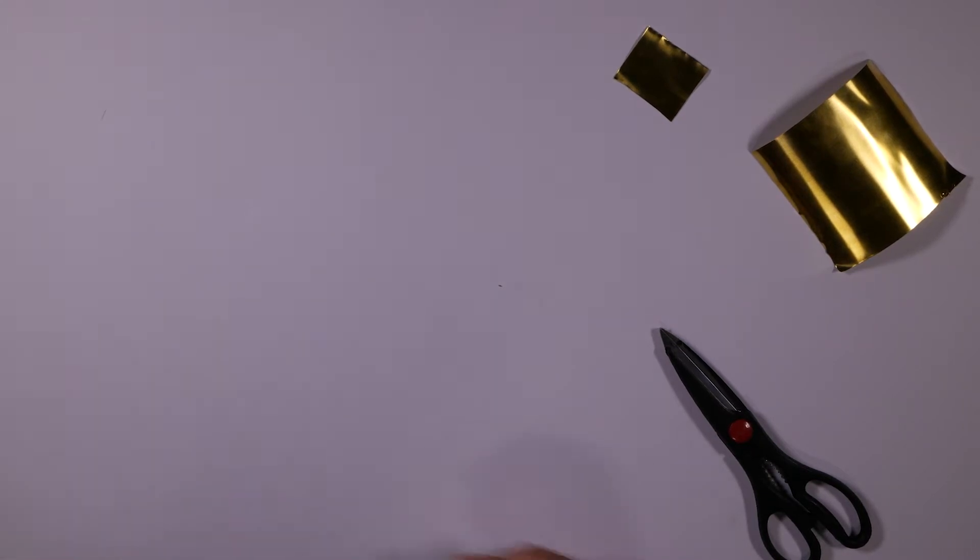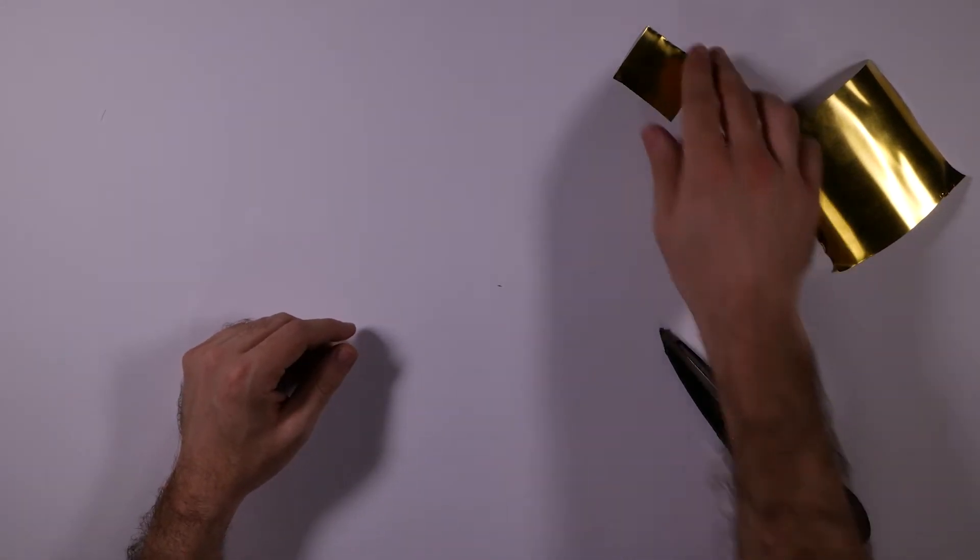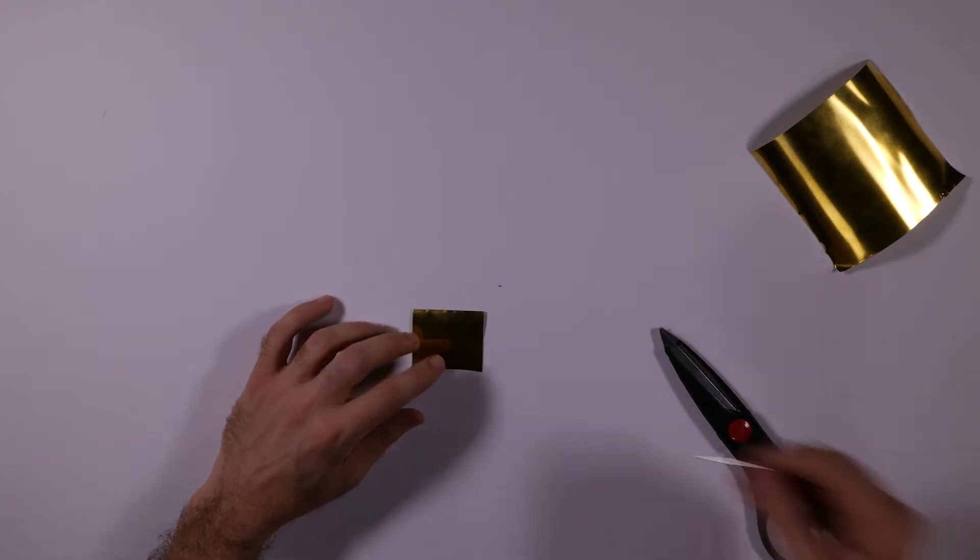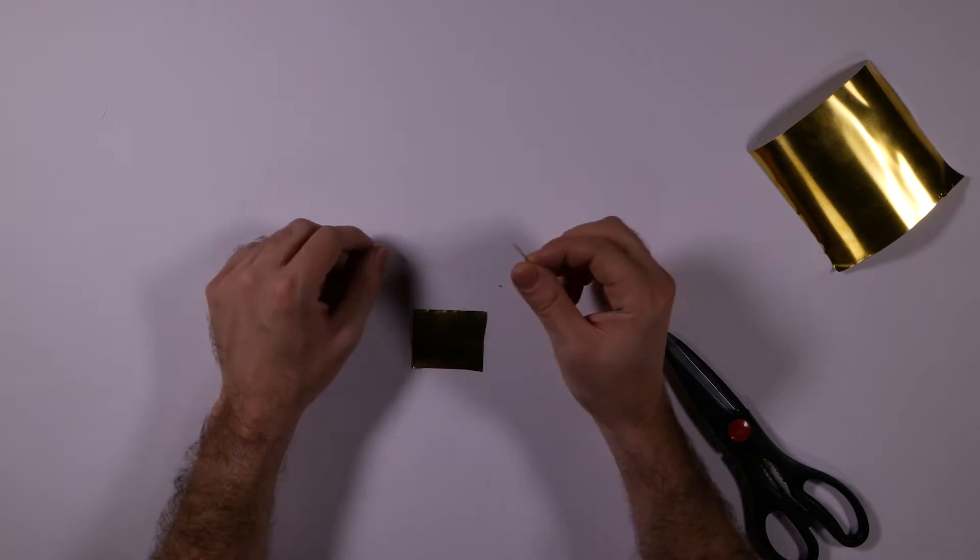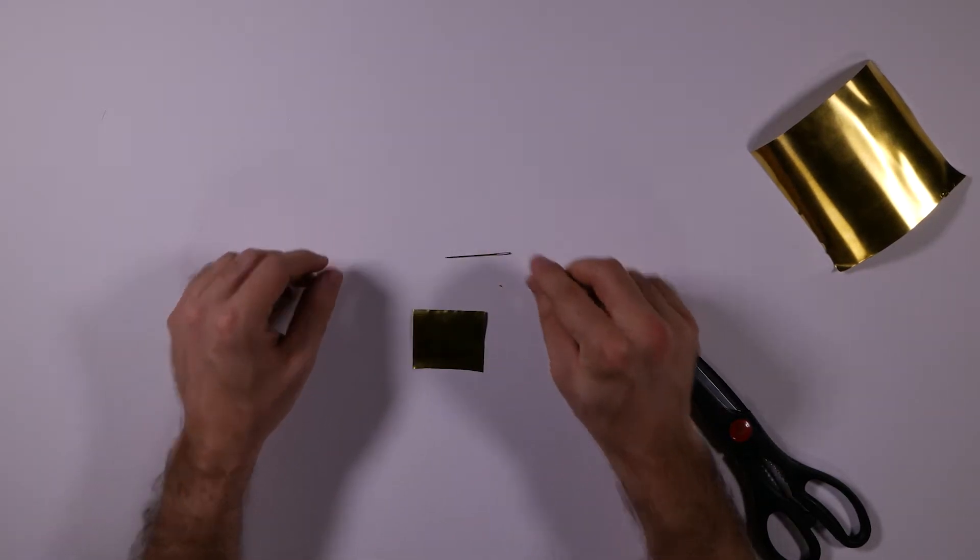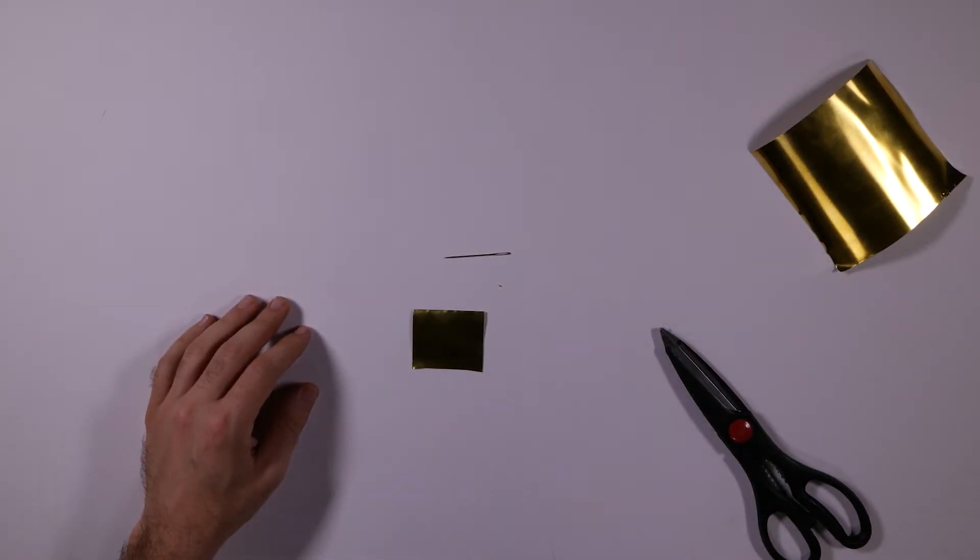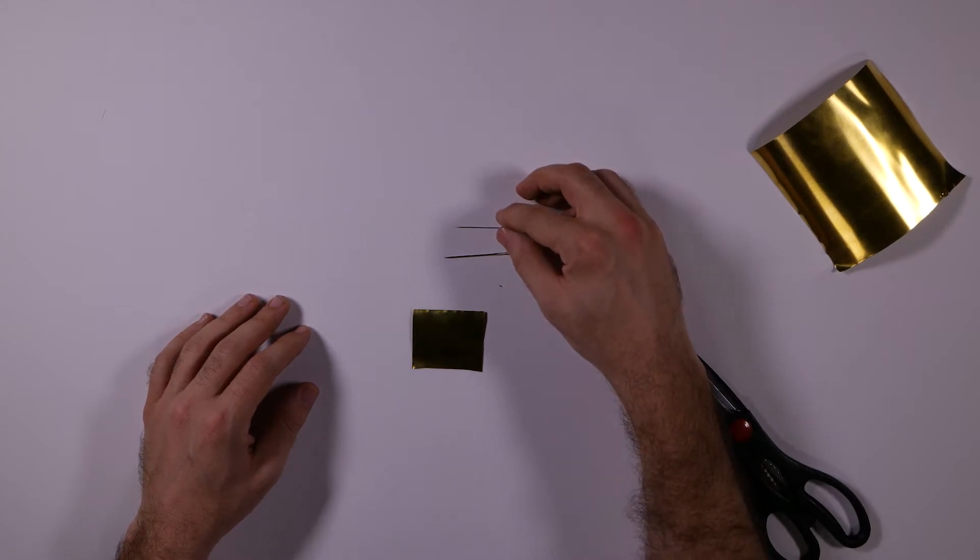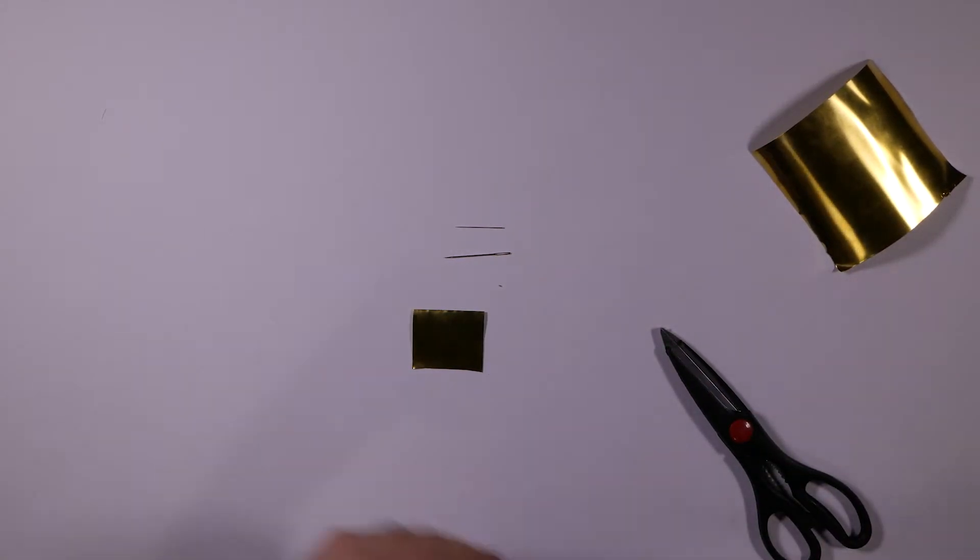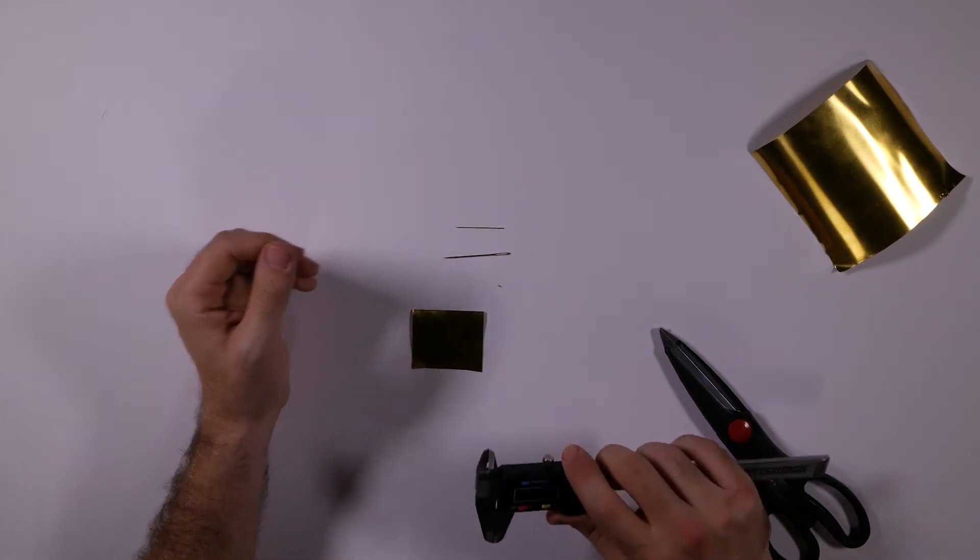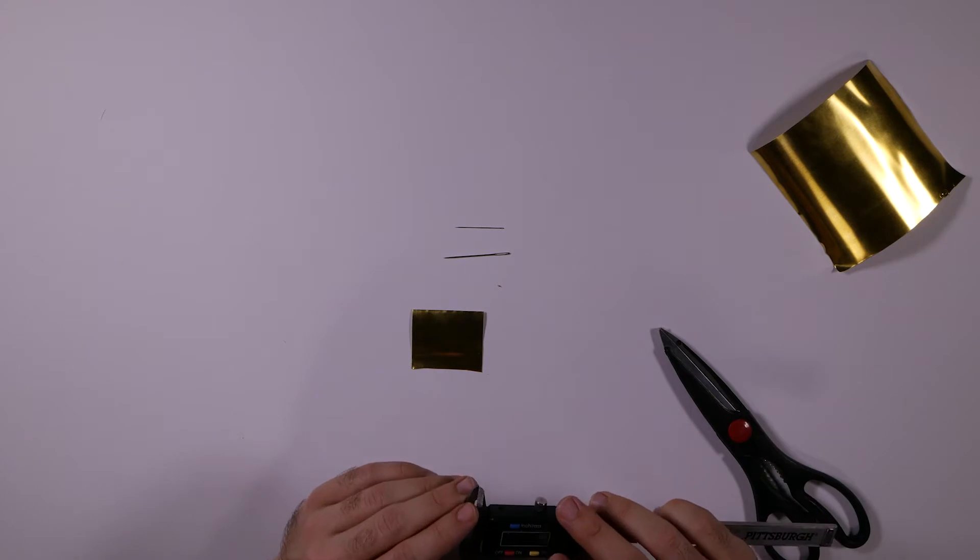Some other things we're going to need are we're going to need something to make the actual pinhole in this material. So we're going to need a pin. This is a sewing needle, and this is actually a really thick sewing needle, so I'm not going to be using this one, but hopefully it shows up a little bit better on camera. I'm going to be using this one, which is a lot thinner. And just to give you an idea of how thin these are, these are standard sewing needles.